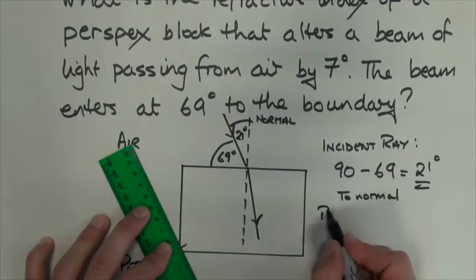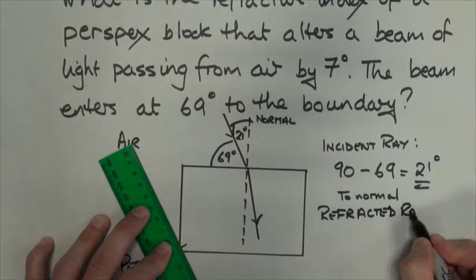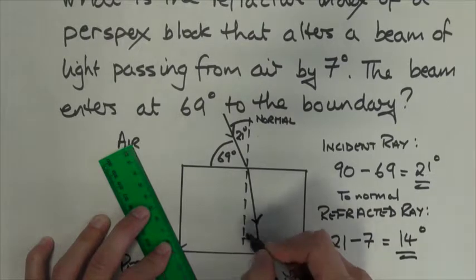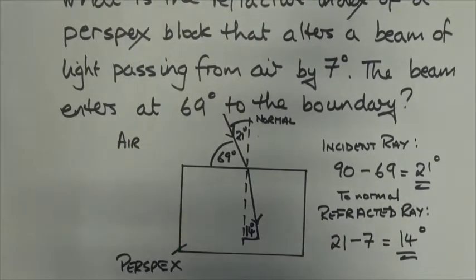So now here's my refracted ray, and I know that the 21 degrees is altered by 7 degrees by the perspex block, so that means my refracted ray is 14 degrees.